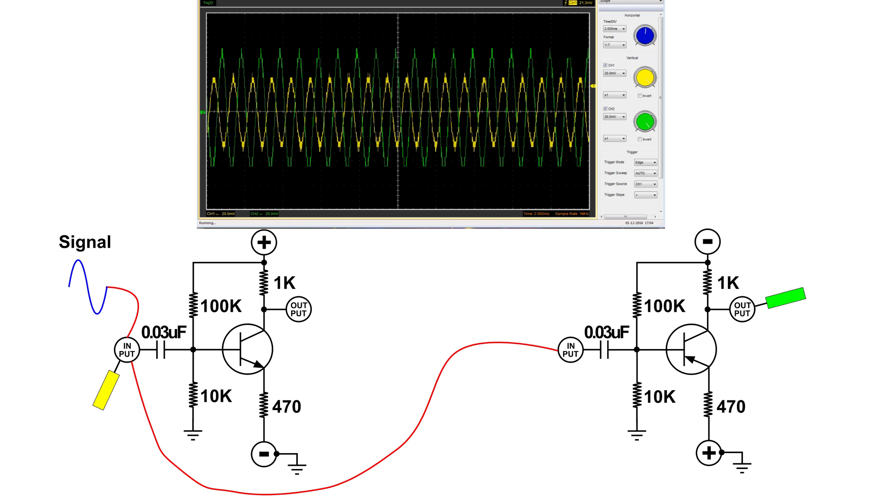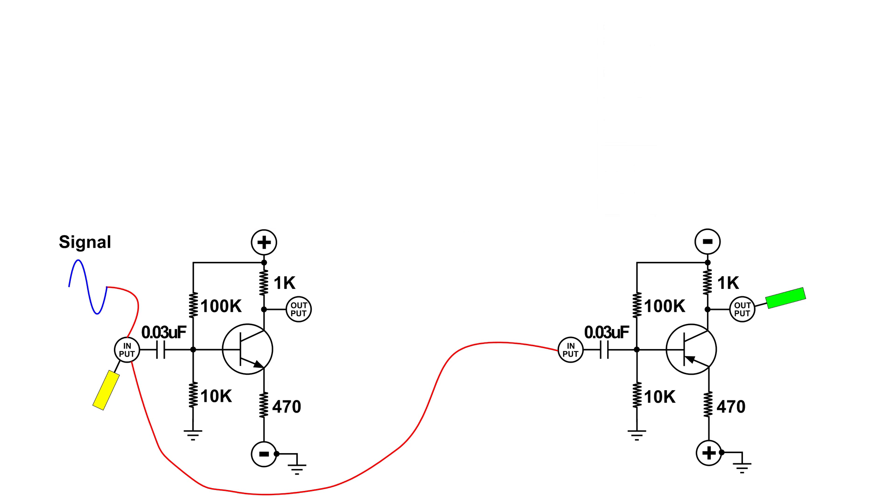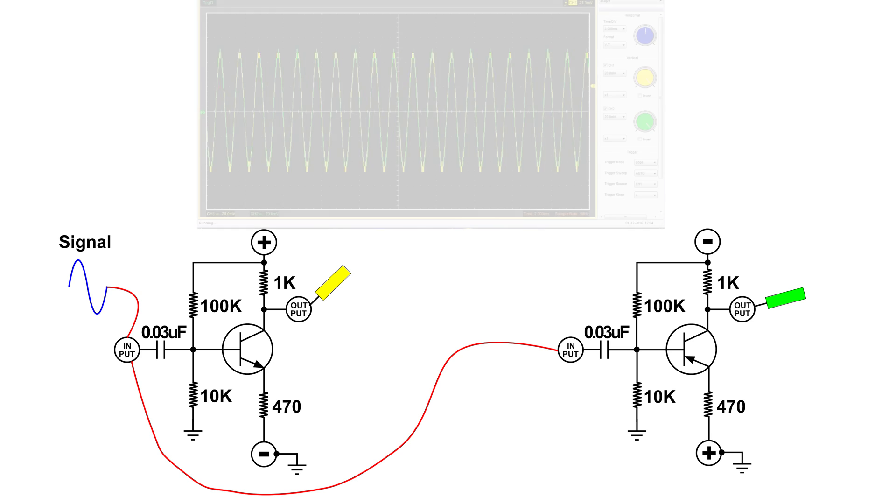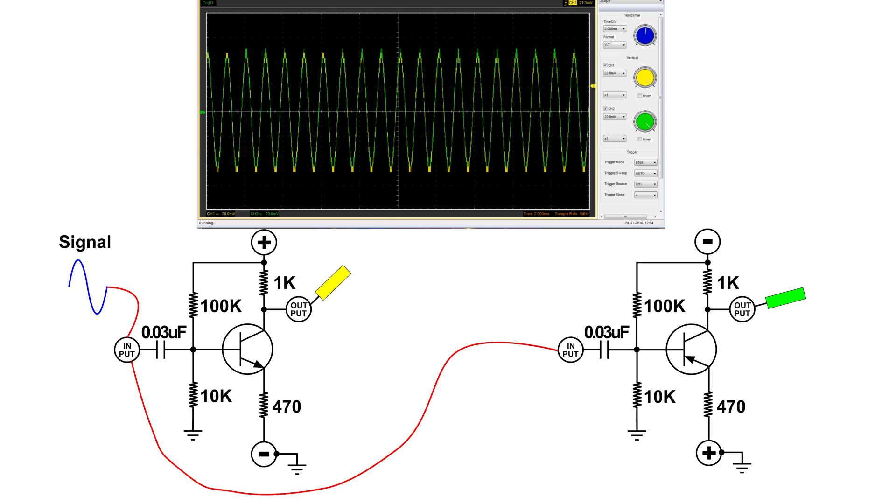Now let's look at the output of both single stage amplifiers at the same time. The yellow probe is on the output on the collector of the NPN transistor and the green probe is still on the output on the collector of the PNP transistor.